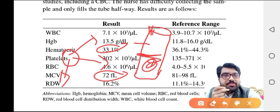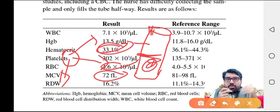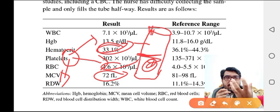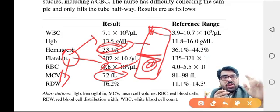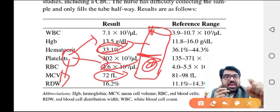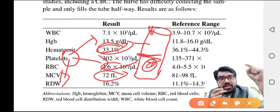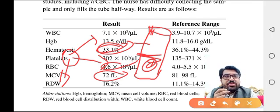The machine calculates hematocrit from MCV and RBC count. If your MCV is low, hematocrit will also be low. So: less blood → more EDTA → RBC shrinkage → low MCV → low hematocrit. This is an error, not the actual finding in the patient. As a result, you may order further studies unnecessarily. Before proceeding to further studies, you must repeat the CBC and address this collection error.